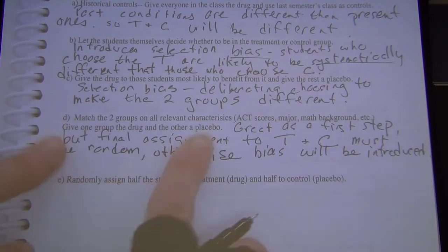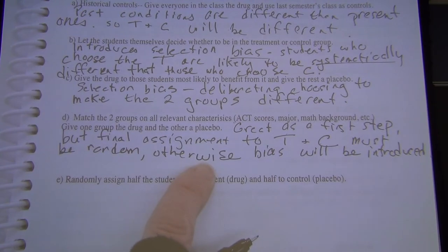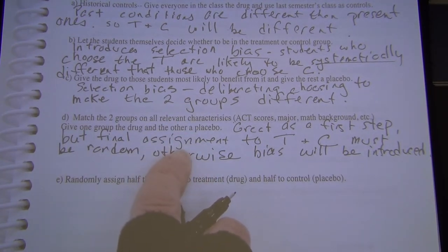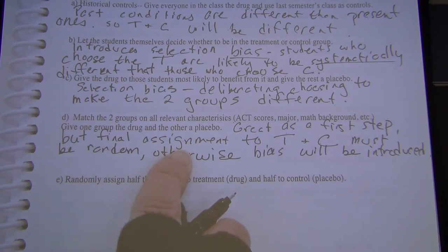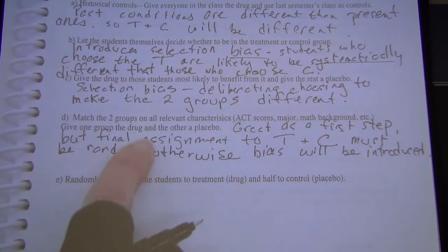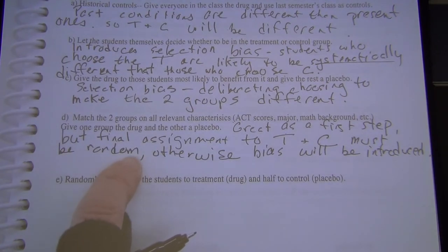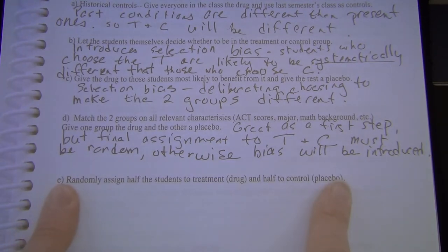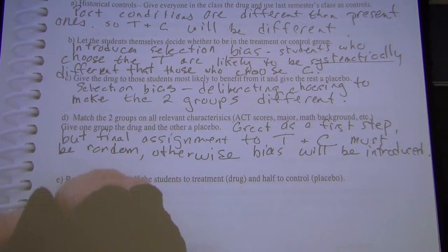Bias can come from relevant characteristics we haven't identified. There could be things we haven't even thought about that affect whether someone benefits from the treatment — and we want those evenly distributed between the two groups.